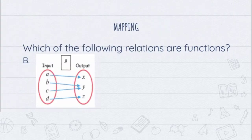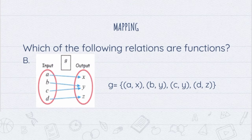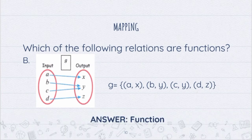We have here another map of relation g. We'll transform this into a set of ordered pairs: a paired to x, b paired to y, c paired to y, and d paired to z. The y value was repeated twice, but again, it does not matter. As long as your x values — a, b, c, and d — are all unique, it is still a function.